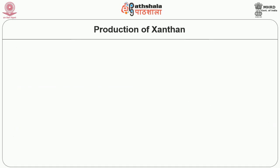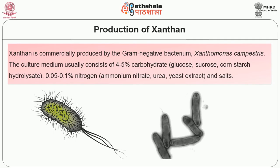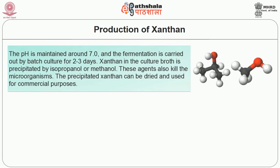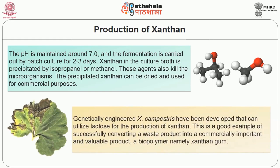Xanthan is commercially produced by the gram-negative bacterium Xanthomonas campestris. The culture medium usually consists of 4-5% carbohydrate, 0.05 to 1.1% nitrogen and salts. The pH is maintained around 7 and the fermentation is carried out by batch culture for 2 to 3 days. Xanthan in the culture broth is precipitated by isopropanol or methanol, which also kill the microorganisms. The precipitated xanthan can be dried and used for commercial purposes. Genetically engineered Xanthomonas campestris have been developed which can utilize lactose for the production of xanthan — a good example of successfully converting a waste product into a commercially important biopolymer, namely xanthan gum.